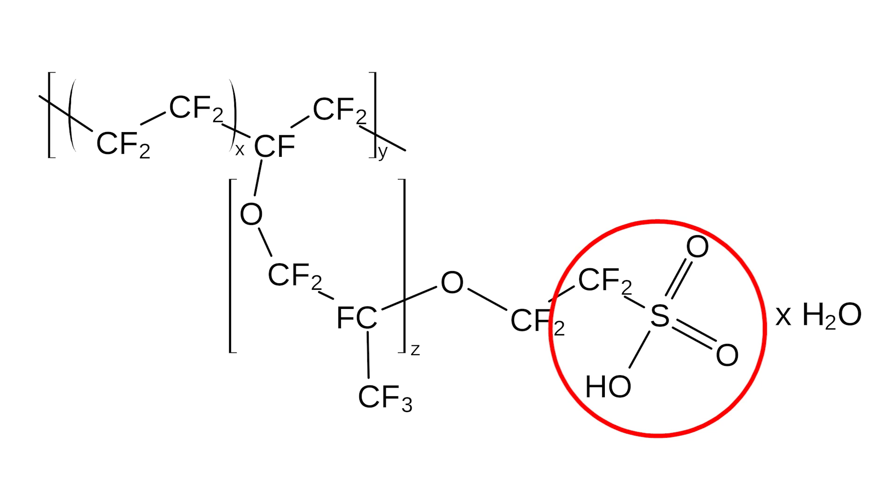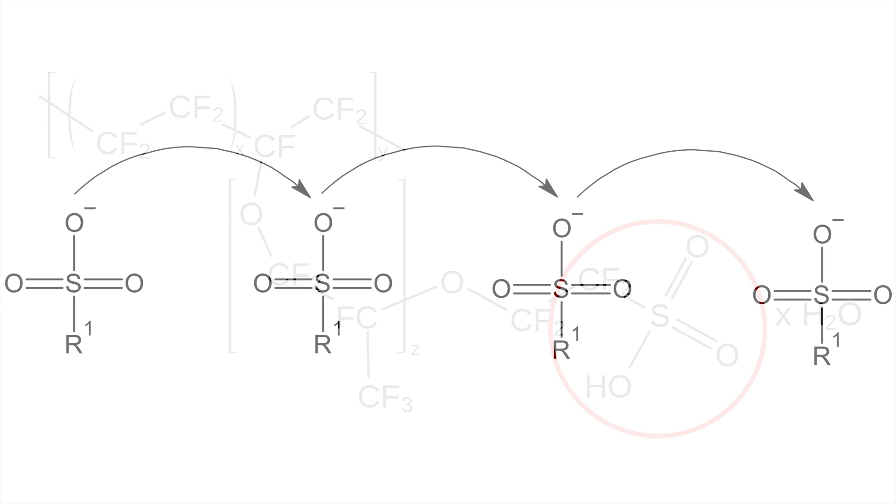But what really makes this useful rather than just being Teflon plastic wrap is the sulfonate groups incorporated into the structure. These sulfonates impart an ionic charge to the polymer and make it an ionomer. It is permeable to cations but blocks anions.